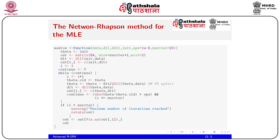Inside the Newton-Raphson loop, theta_old = theta, then theta = theta - dll(theta, data) / d2ll(theta, data). This is the univariate Newton-Raphson update expression. We update theta each iteration and check abs(theta - theta_old) > eps to continue the while loop. If the iteration count reaches the maximum of 20, a warning is issued and the loop stops, returning the estimate at the 20th iteration.